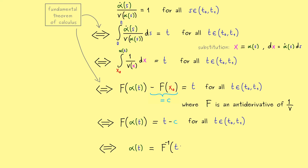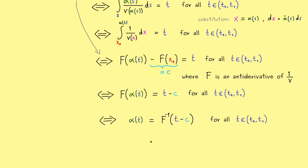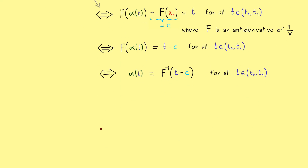In conclusion, the solution is alpha of t equals F inverse of t plus c, where we adjust the constant c so that the initial value is satisfied. That is the whole procedure for solving a first order autonomous ODE. Of course this looks very theoretical, so let's look at two examples. You'll also see that you don't have to memorize the procedure — you simply need to know what to do in the calculation.